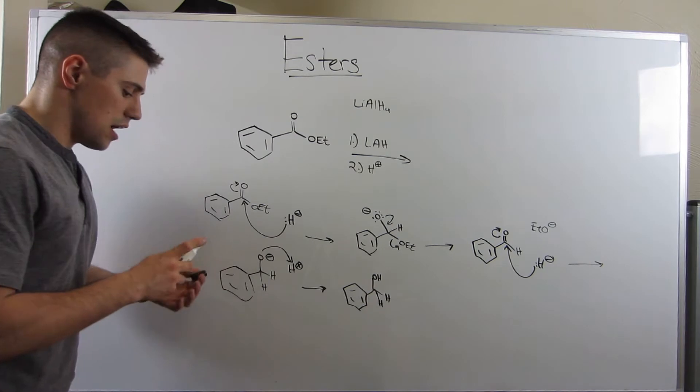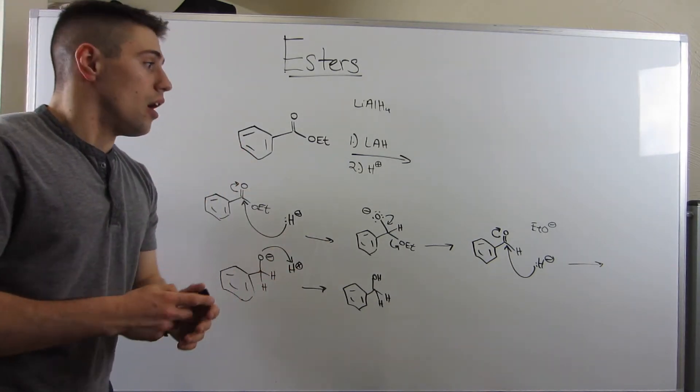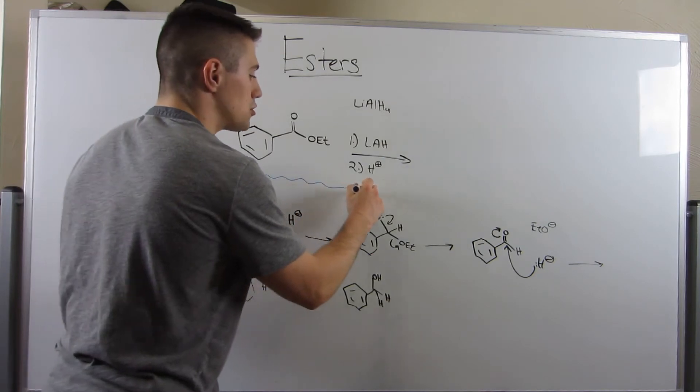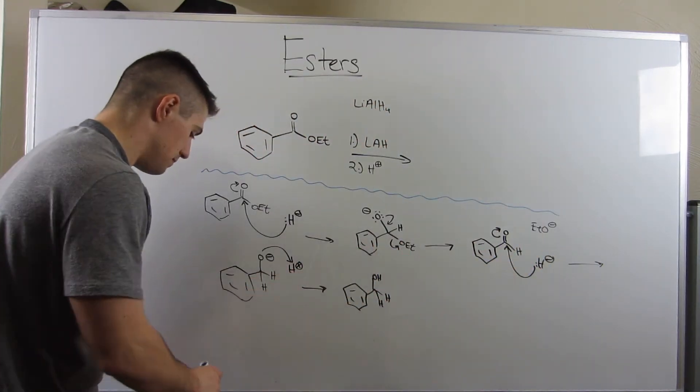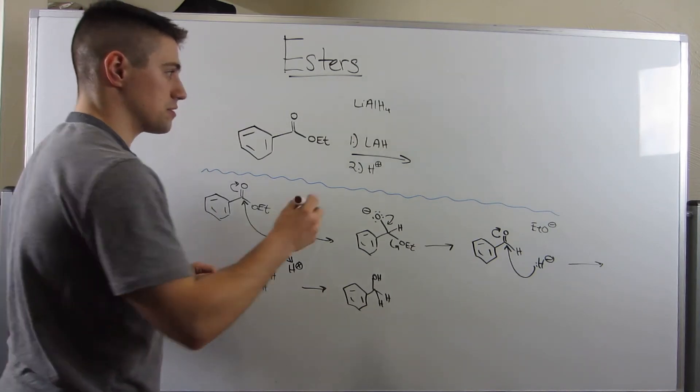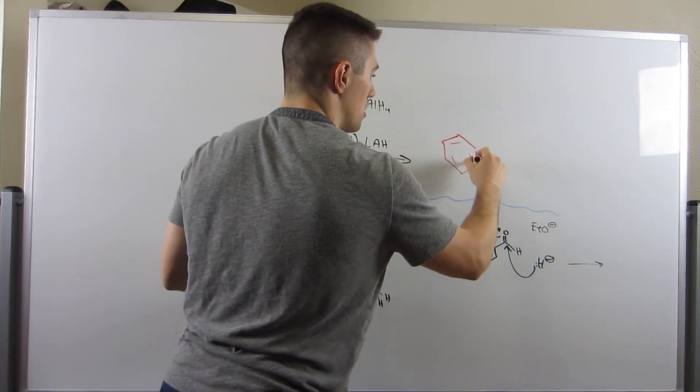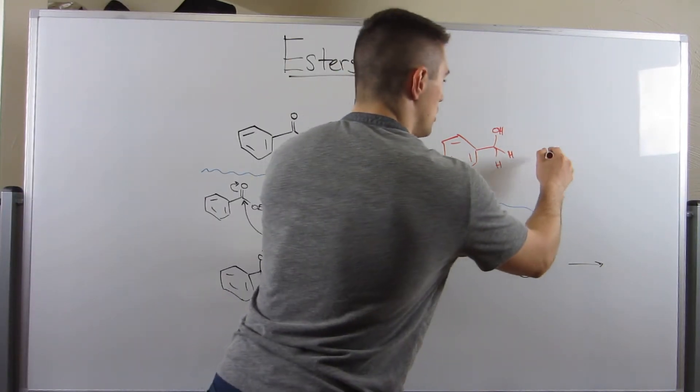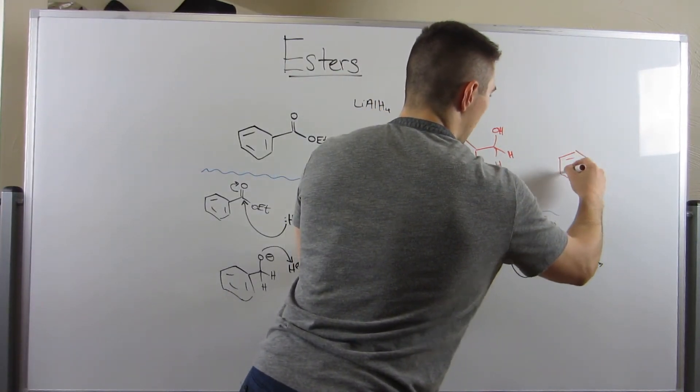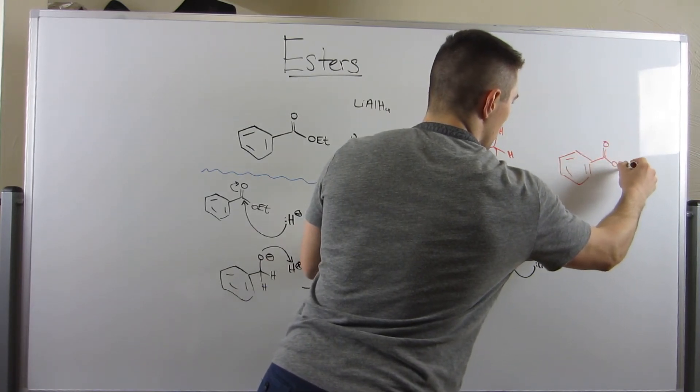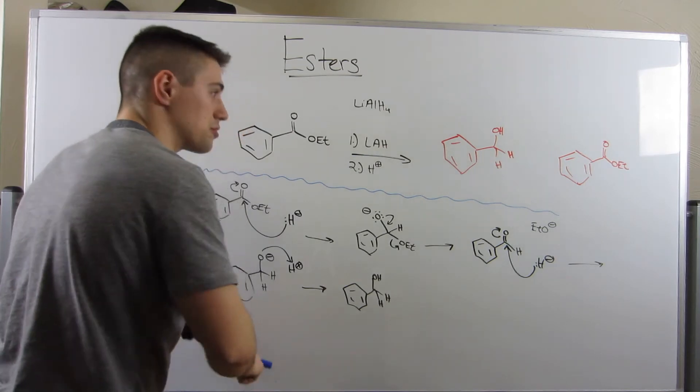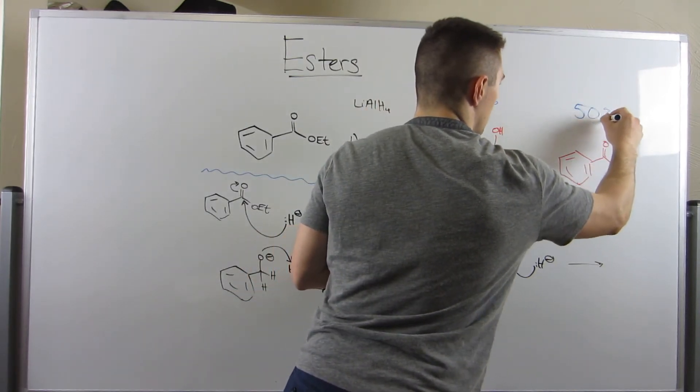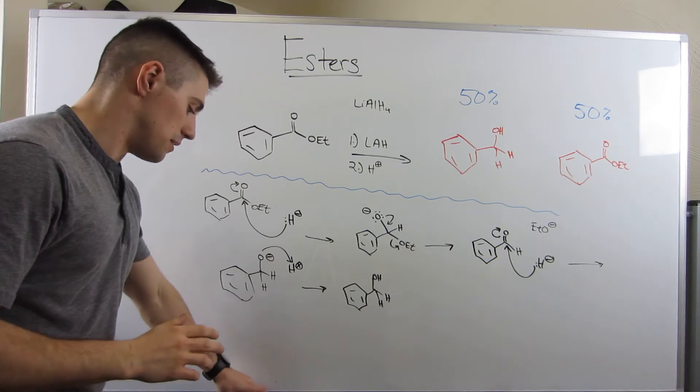This mechanism you've seen before in a different form, but I want to raise an interesting point. If you've actually run this reaction in real life, I want to show you kind of the percentages of product you would get. You would probably see something around this: you would see the product we just drew mechanistically, this alcohol, and you'd also see a lot of leftover reactant - a lot of leftover ester. You'd probably see percentages like this: 50% of your product and 50% unreacted. Let me explain.